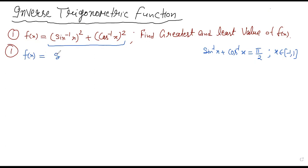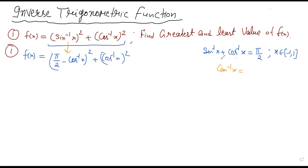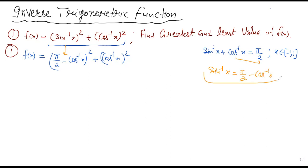Here we have sin⁻¹x, and we can change sin⁻¹x using the identity. So sin⁻¹x = π/2 − cos⁻¹x. Therefore the function becomes (π/2 − cos⁻¹x)² + (cos⁻¹x)². Now this function is in terms of cos⁻¹x only, but working with cos⁻¹x directly is quite involved.